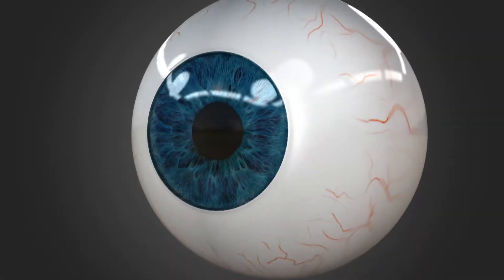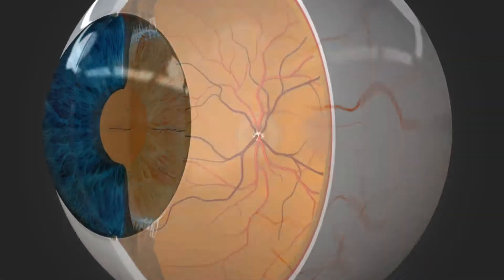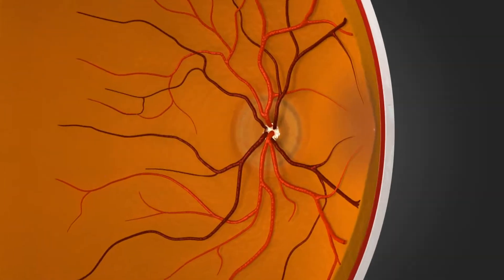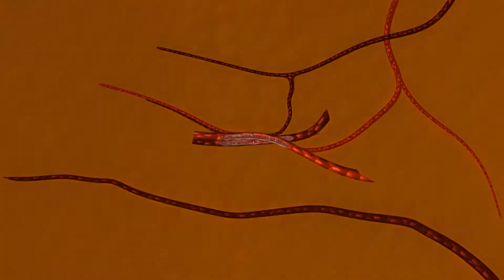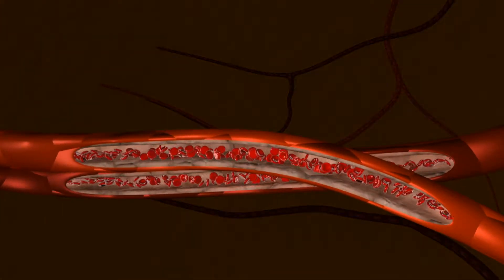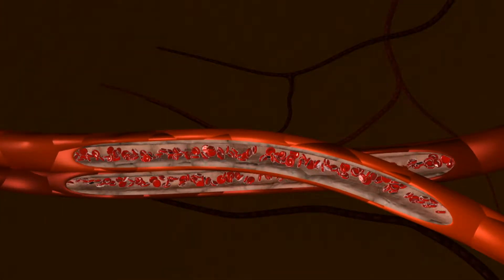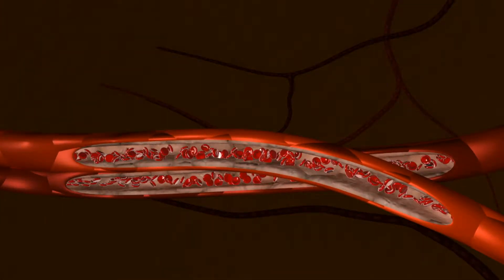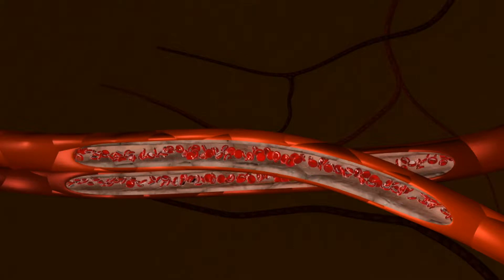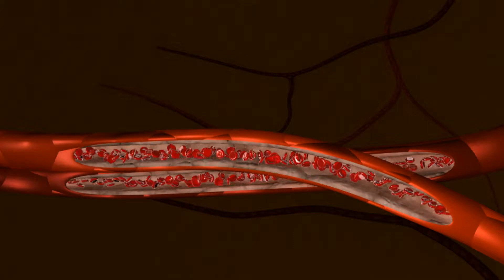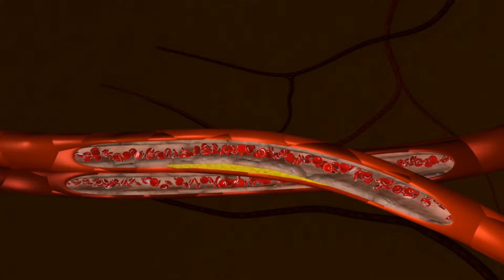Branch retinal vein occlusion, or BRVO, is caused by a disturbance in the relationship between the artery and the vein serving part of the retina. Because both blood vessels lie in close proximity within the same membrane, hypertensive and sclerotic arteries can compress the neighboring vein.